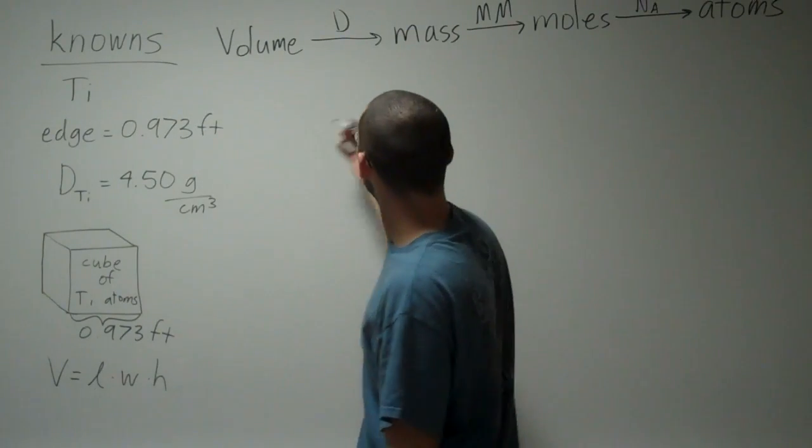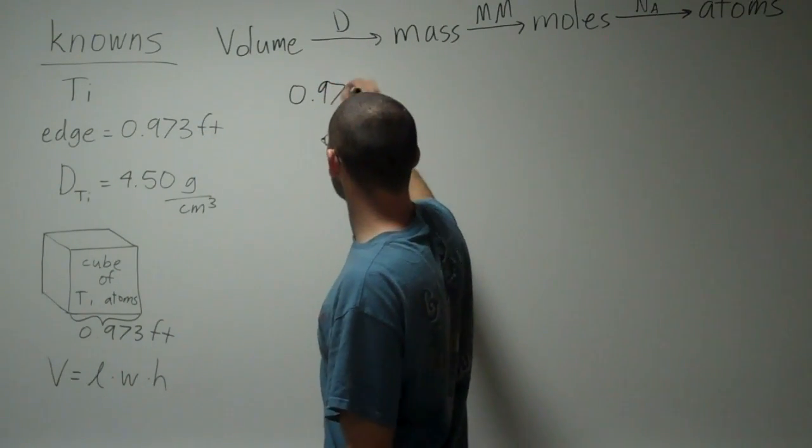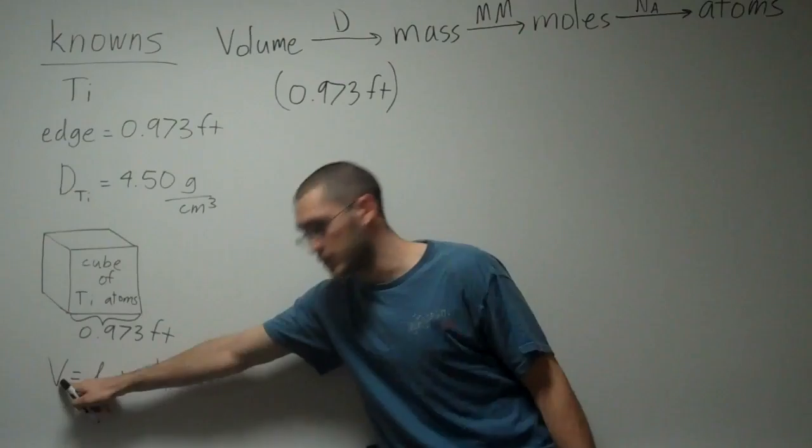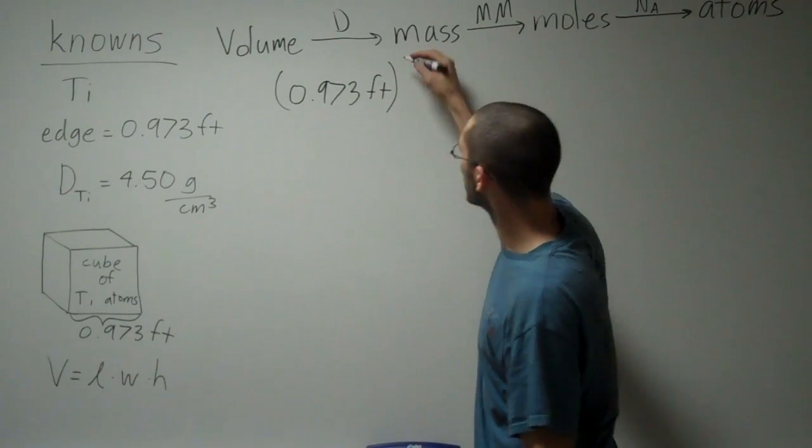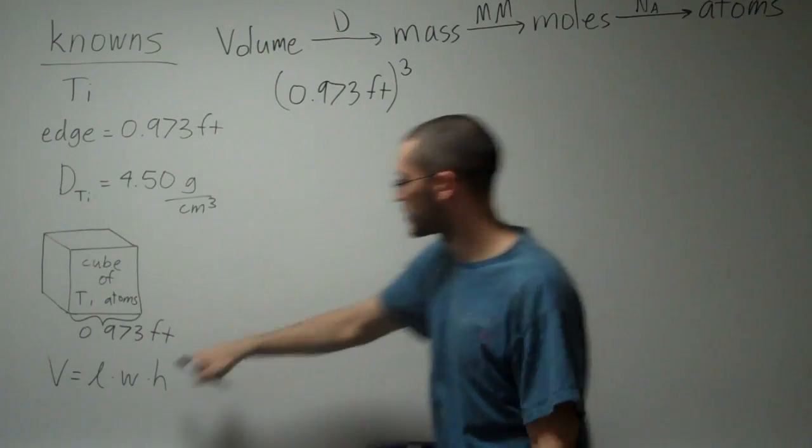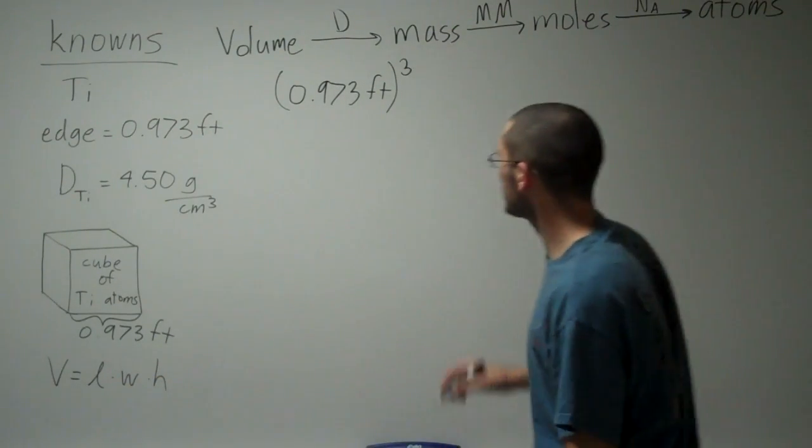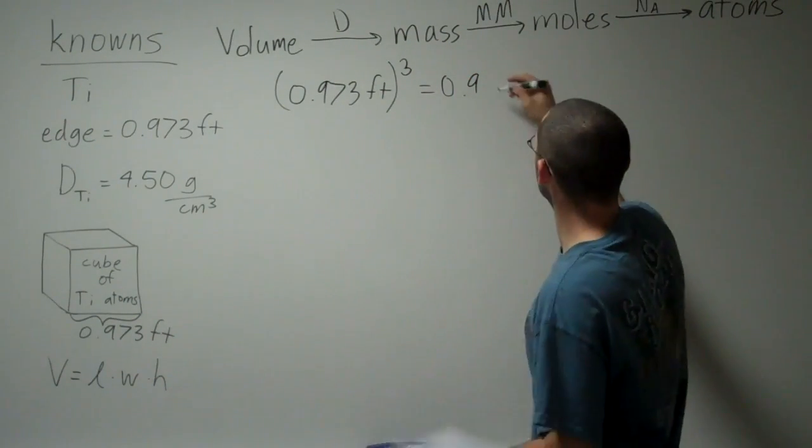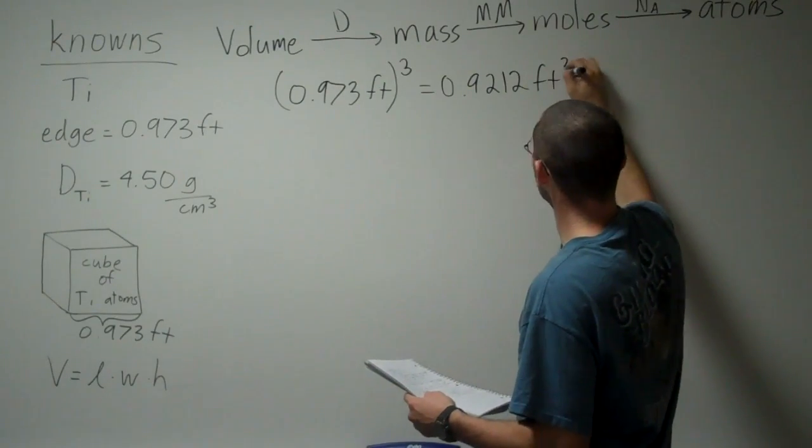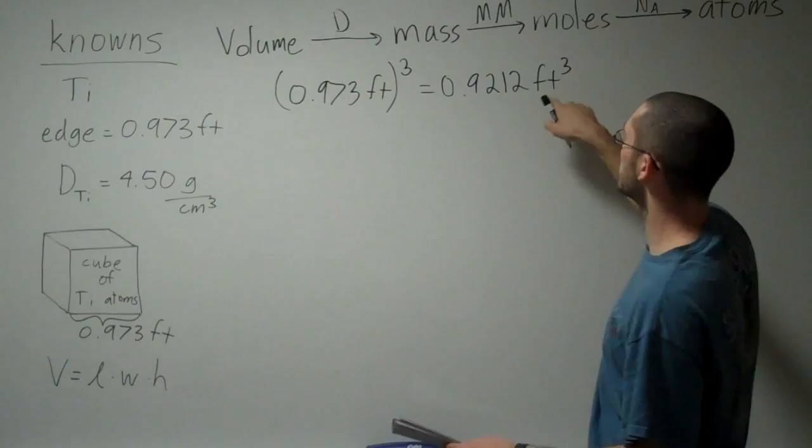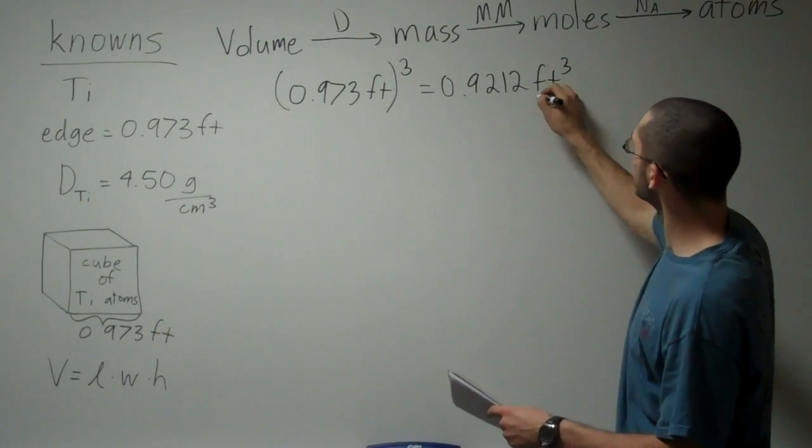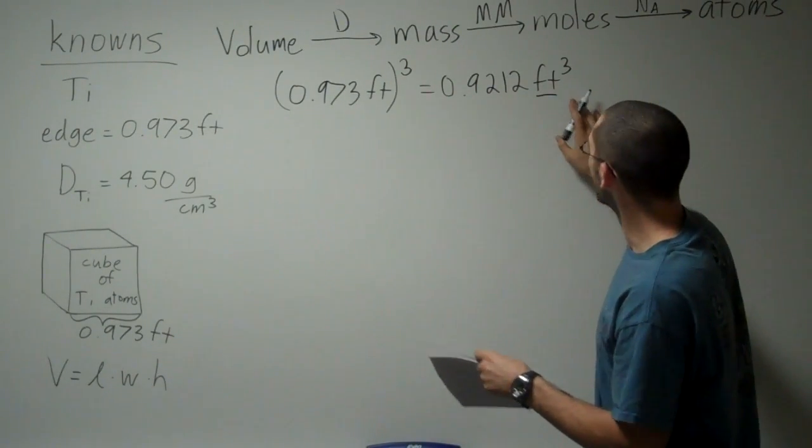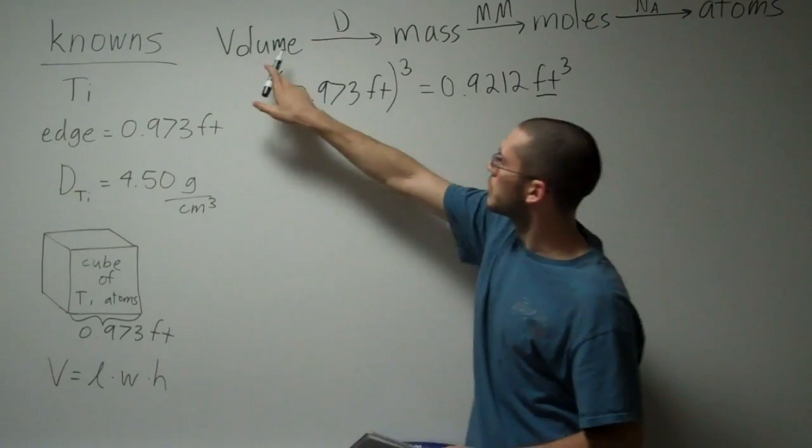I'm given my edge length of 0.973 feet. I'm going to use my equation for volume to give me volume. So I'm going to take this edge and I'm going to cube it. That's the same as saying this times itself times itself again, three times. I get 0.9212 cubic feet. Notice how whenever I cube my feet, it actually turns into cubic feet. If I ever have this unit of length and it's cubed, that means volume. That's a unit of volume now.